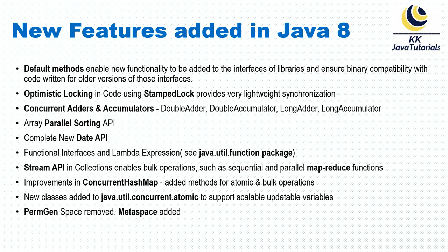Let's start with the first feature. From Java 8 onwards, we can define methods in an interface itself — these are called default methods. The method signature requires the keyword 'default'. Any class implementing the interface has the ability to access those methods. Default methods enable new functionality to be added to interfaces of libraries while ensuring binary compatibility with code written for older versions of those interfaces.